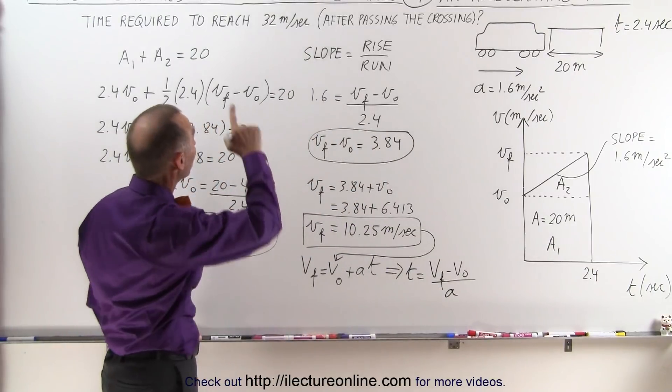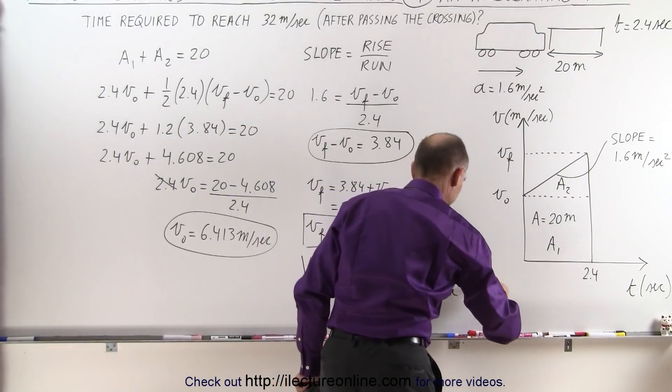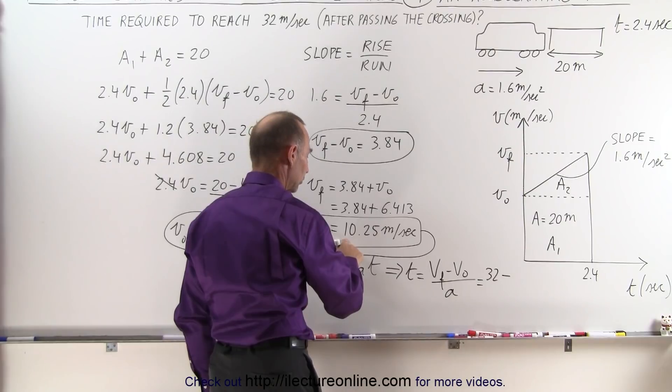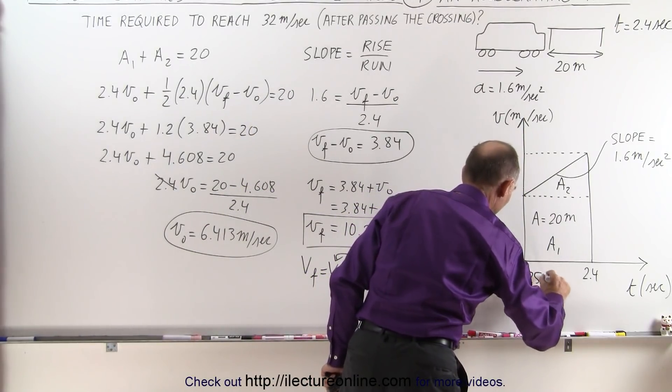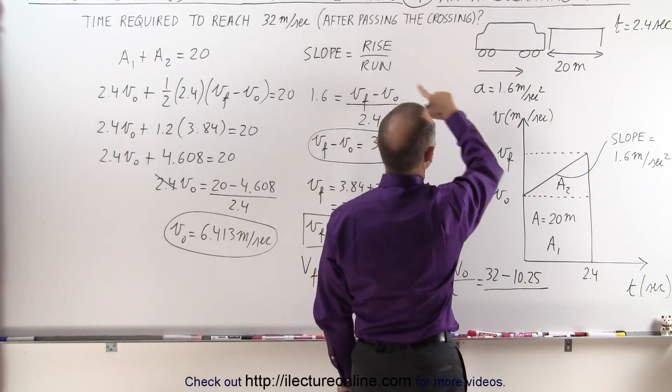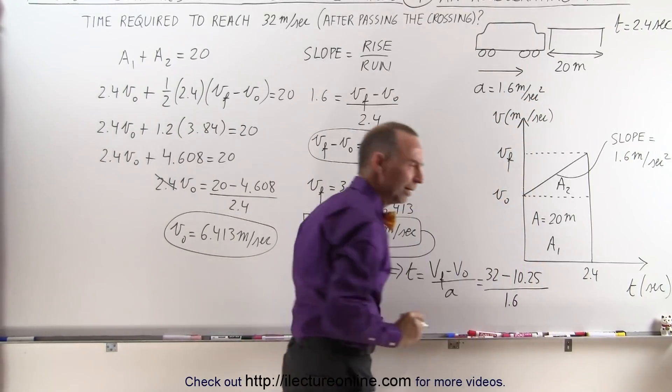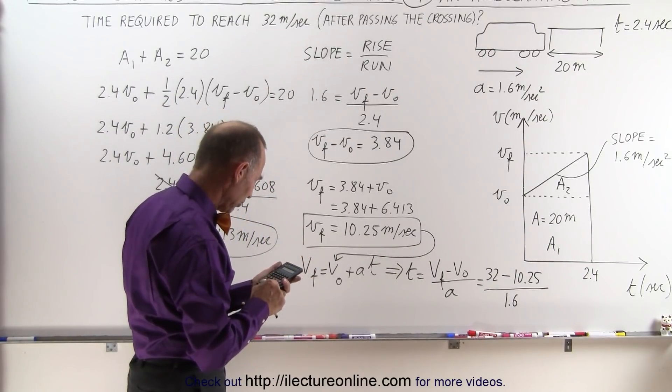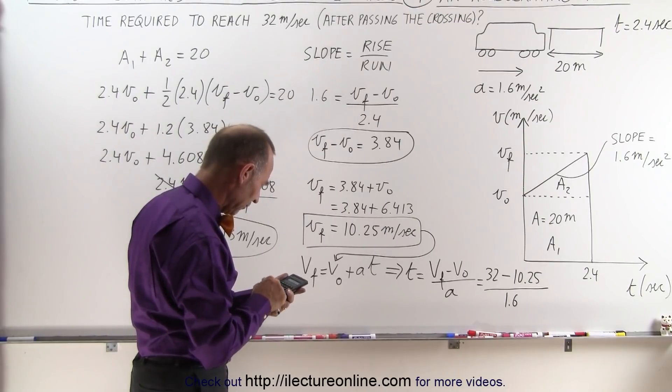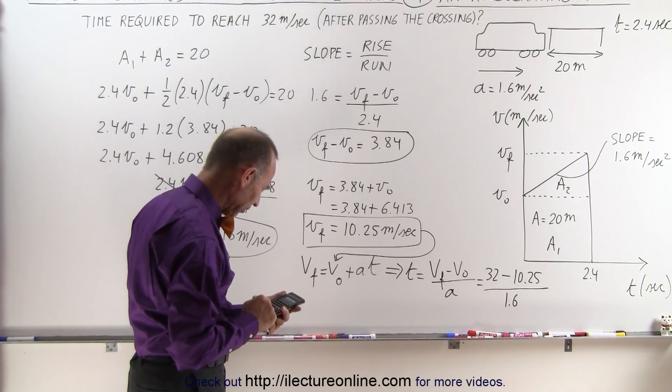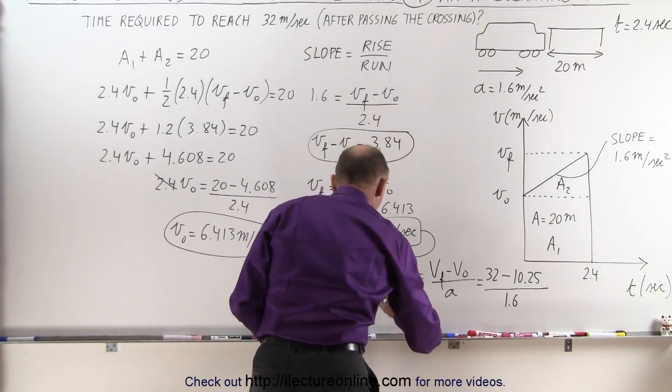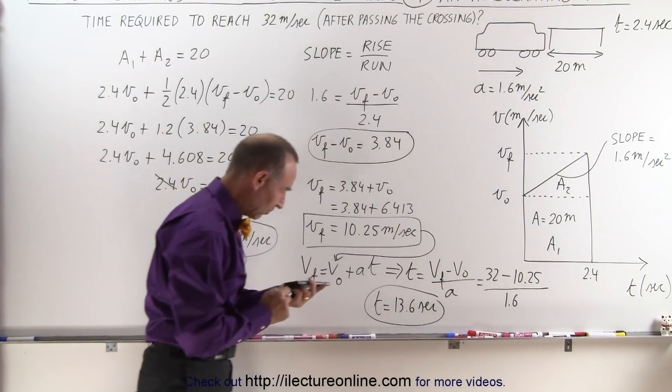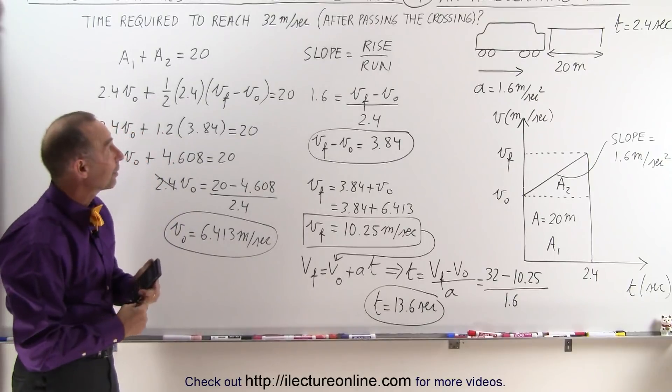Now our V_final this time will be the 32 meters per second. V_initial will be the final velocity after the train crosses the railroad crossing—that would be minus 10.25—and we divide that by the acceleration the train had of 1.6 meters per second squared. For a train, I think that's quite an acceleration, but we'll ignore that for now. And so that means the time is going to be 32 minus 10.25 divided by 1.6. It looks like about 13.6 seconds. So time equals 13.6 seconds. That's how much more time the train would need to get up to a speed of 32 meters per second.